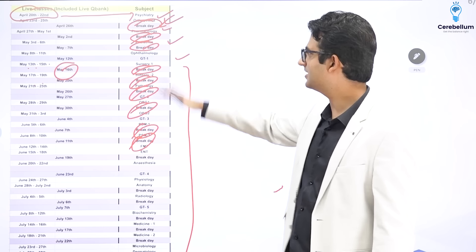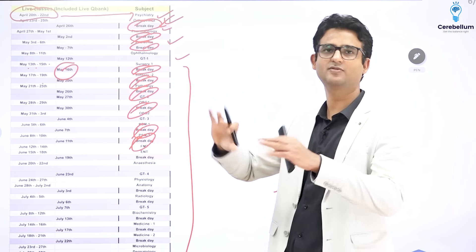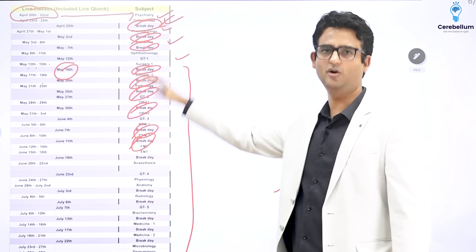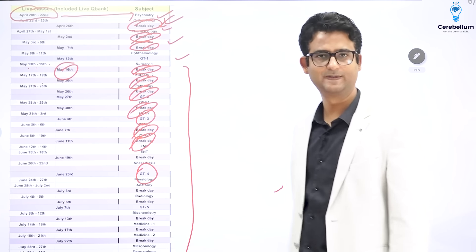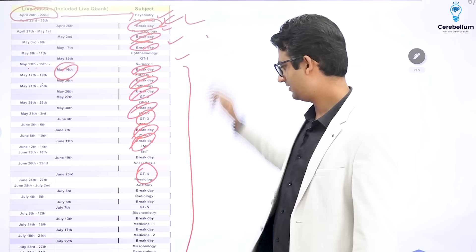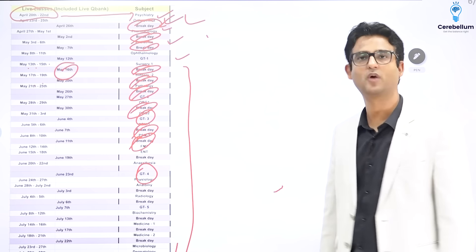Now, this is the preliminary schedule. There might be some shuffling of the subjects if it clashes with some other class. But broadly, this is how it is going to be. As you can see, there are GTs in between. So April 20th till say July 30th. This is your phase 1.